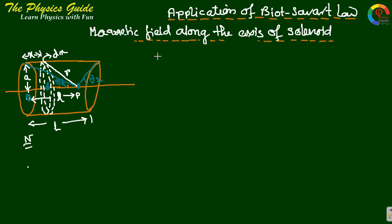This is the application of Biot-Savart law to find the magnetic field along the axis of a solenoid. Let this be a solenoid of length L and radius A, and we imagine it consists of a large number of small ring elements with width dx.